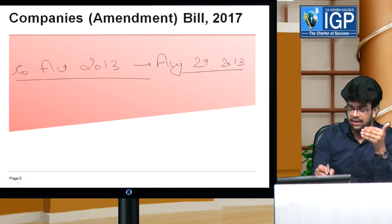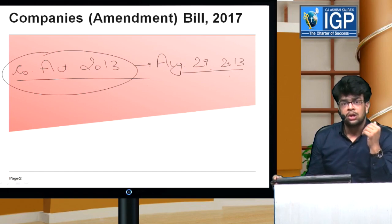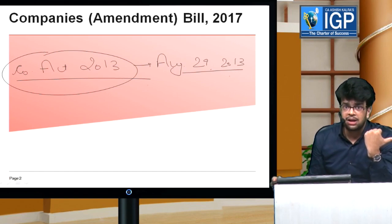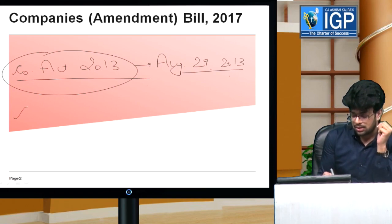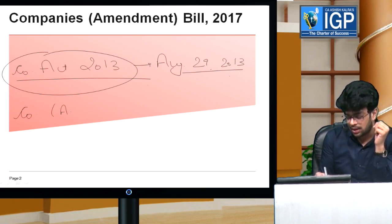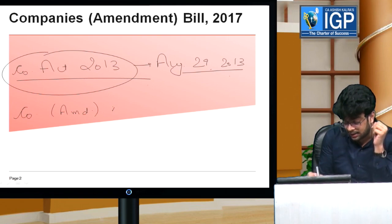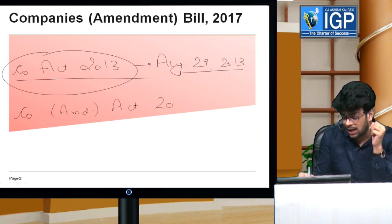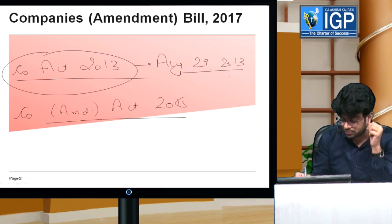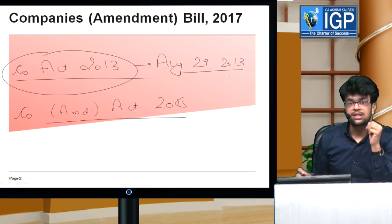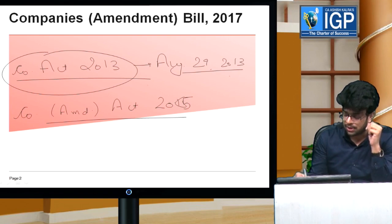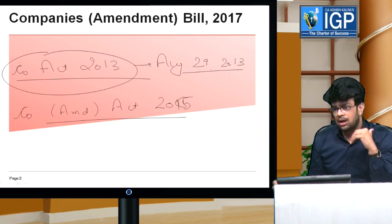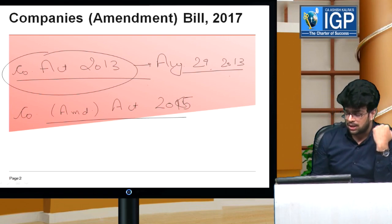Is this the first amendment to the Companies Act 2013? No. Before that, the Companies Amendment Act 2015 has already been enforced. Let's take an example of its role. The Companies Amendment Act 2015 introduced a new section 76A in the deposits chapter.